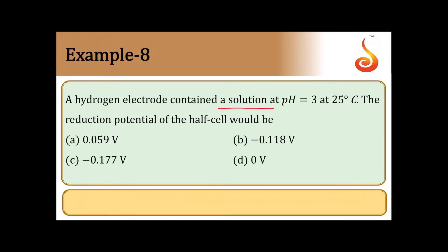A hydrogen electrode contained a solution at pH 3 at 25 degrees Celsius. The reduction potential of the half cell would be - they are asking us the potential of hydrogen electrode when that is placed in a solution of pH 3.